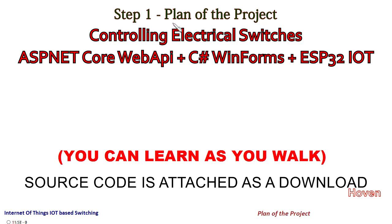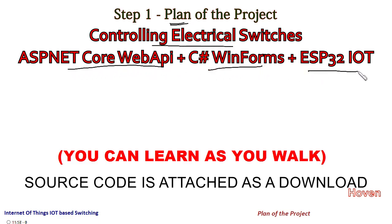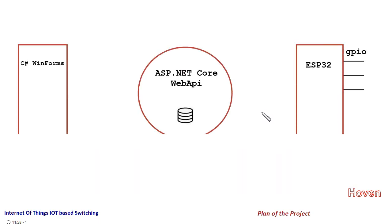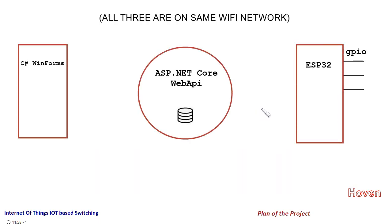Let us try to understand the plan of this project. This is the most important tutorial, which I consider, on controlling electrical switches in ASP.NET Core Web API with CESHA WinForms and ESP32 IoT module. This is the most important tutorial that gives us an overview of the whole plan, so let me explain step by step.